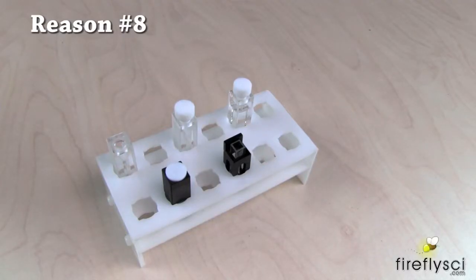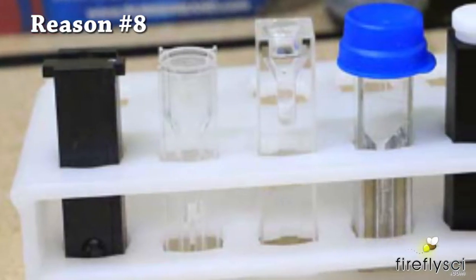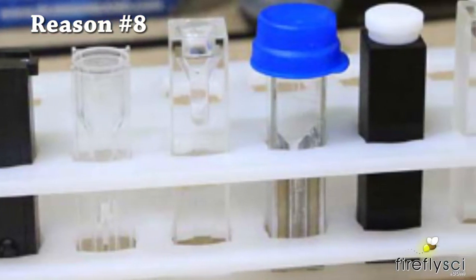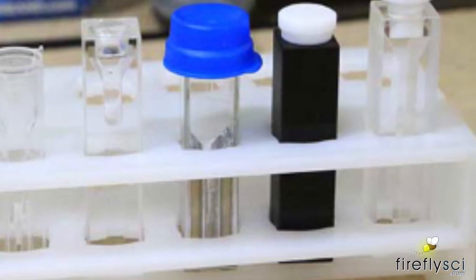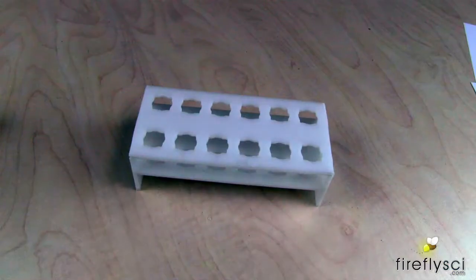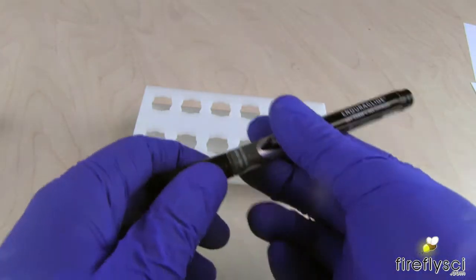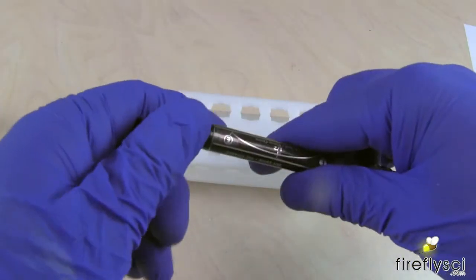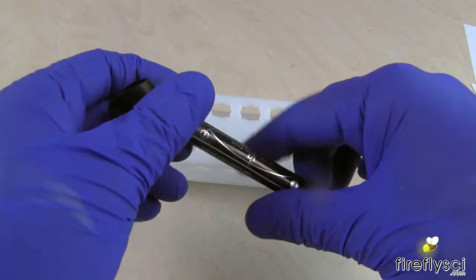Number eight, good for easy viewing and organizing cuvettes. The Firefly side cuvette rack can hold 12 cuvettes. They are laid out in two rows of six cells each, so it is easy to view six cuvettes at a time. Here's a useful tip. You can write on the cell rack with a dry erase marker to easily label your cuvettes.